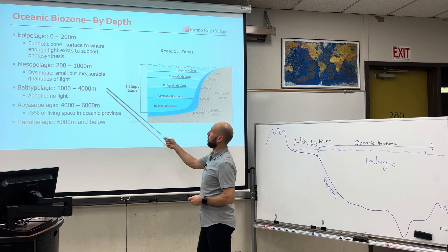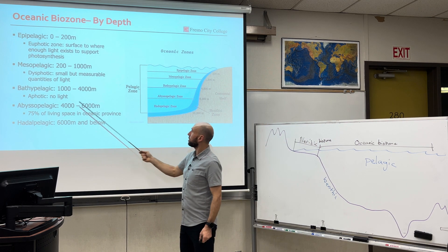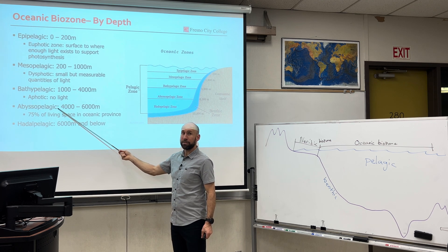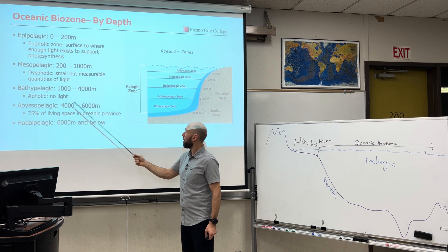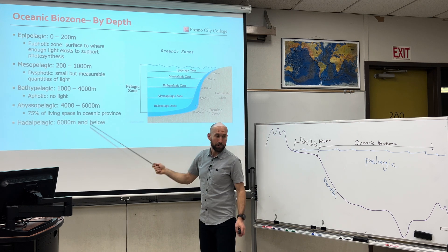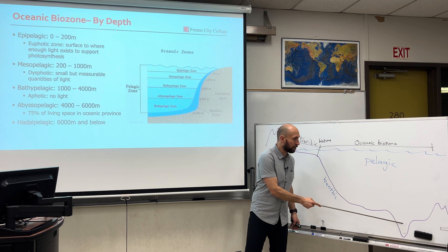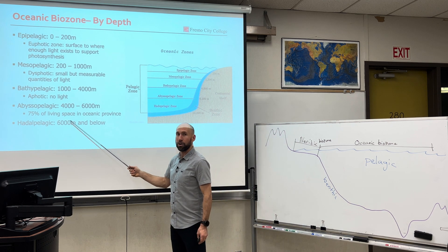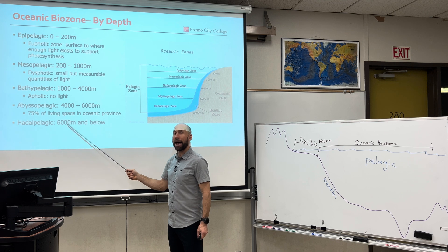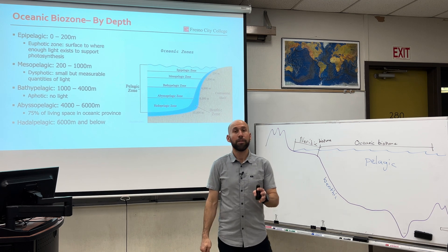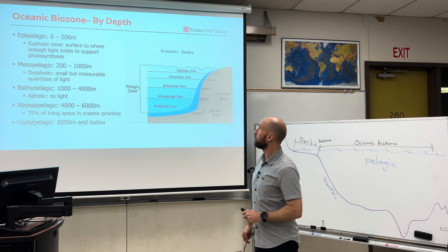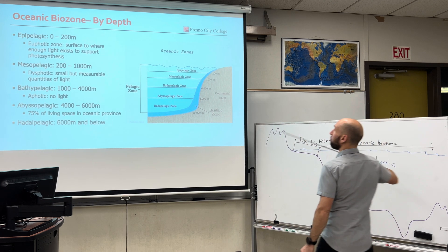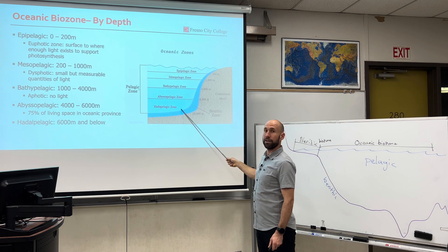We go deeper. From 4,000 to 6,000 meters, we have the abyssopelagic — extreme depths and pressures here. And then in deep ocean trenches, the deepest areas in the world, we have the hadalpelagic, where extreme adaptations to this environment must occur. However, they do occur for marine life to exist. So the oceanic biozone by depth is defined by these zones.